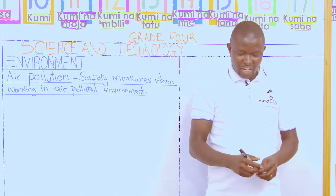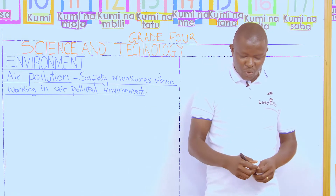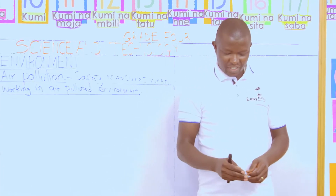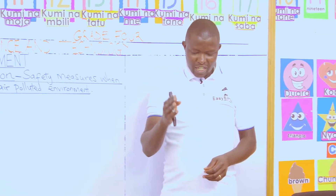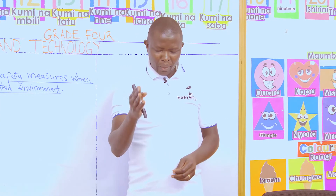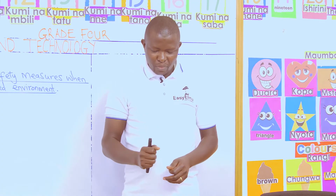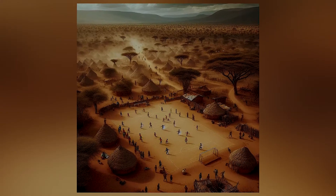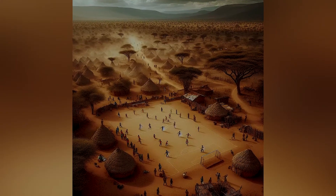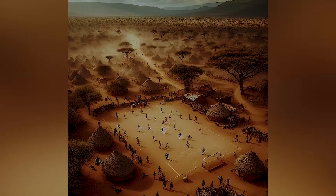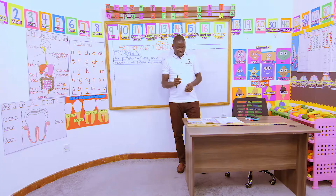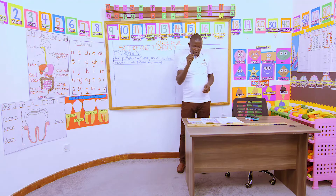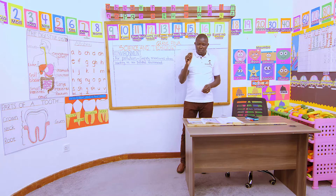Jane, what can you see in picture number two? Picture number two is people playing football, but there is a lot of dust that is being blown by the wind. That is correct. But there is a difference in picture number three and picture number four.